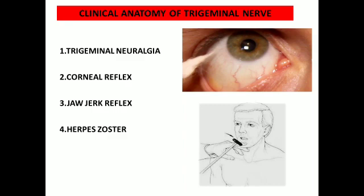The corneal reflex: touching the cornea with a wisp of cotton causes reflex closure of both eyes. The afferent fibers travel through the ophthalmic division of the trigeminal nerve from the cornea. The center of this reflex is in the motor nucleus of the facial nerve, and the efferent fibers travel through the facial nerve to the orbicularis oculi muscle.